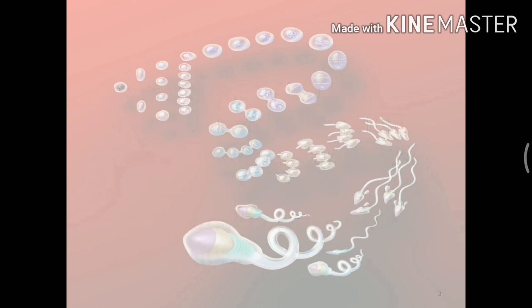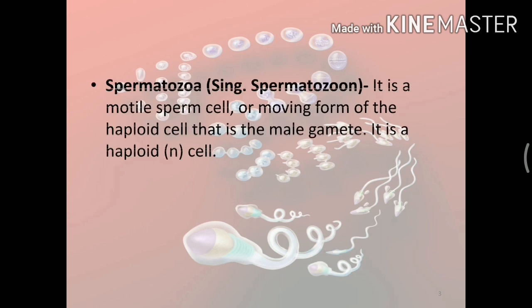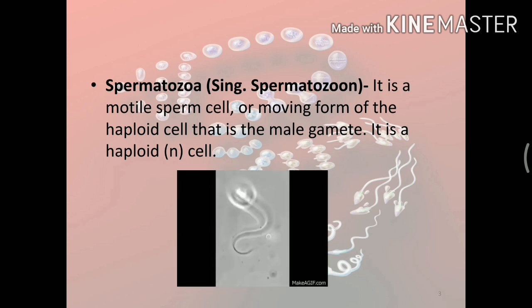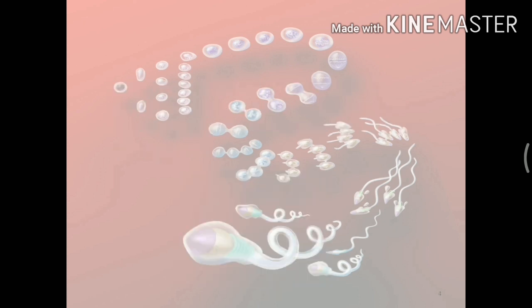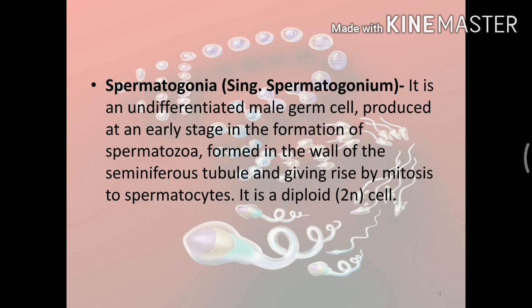To know the process deeper, we need to come across certain important terms related to spermatogenesis. Firstly, spermatozoa — it is a motile sperm cell, or moving form of haploid cell, that is the male gamete. It is a haploid cell. Here is a video showing how a spermatozoa moves.